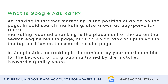Ad ranking in internet marketing is the position of an ad on the page. On PPC, your ad's ranking is the placement of the ad on the search engine results page. In Google Ads, ad ranking is determined by your maximum bid for the keyword or ad group multiplied by the matched keyword's quality score.